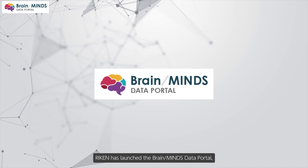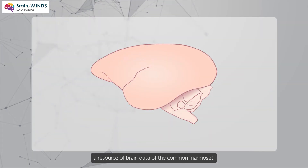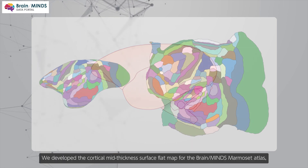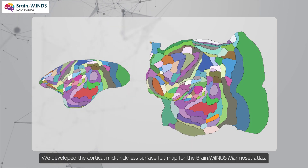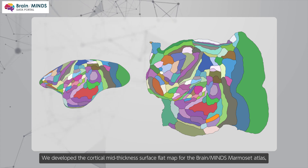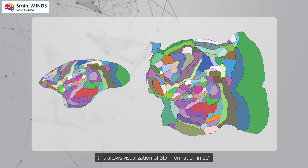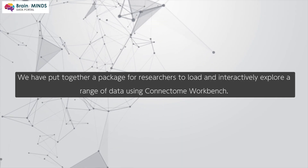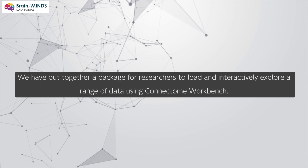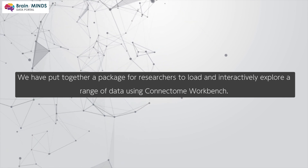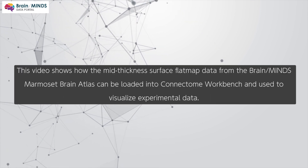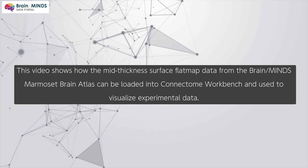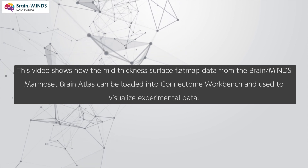RIKEN has launched the Brain Minds Data Portal, a resource of brain data of the common marmoset, a primate closely related to humans. We developed the cortical mid-thickness surface flat map for the Brain Minds marmoset atlas. This allows visualization of 3D information in 2D. We have put together a package for researchers to load and interactively explore a range of data using Connectome Workbench.